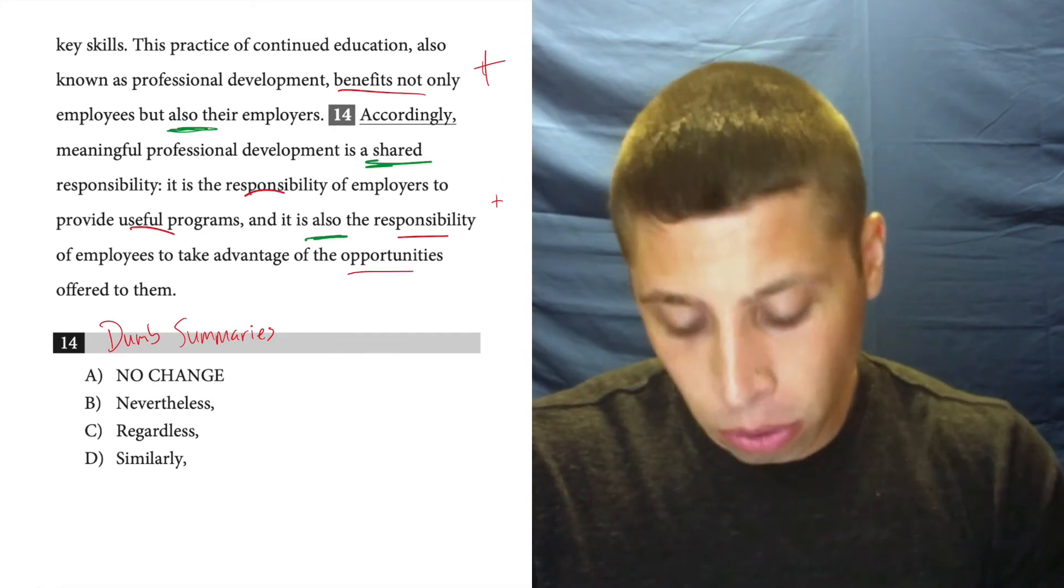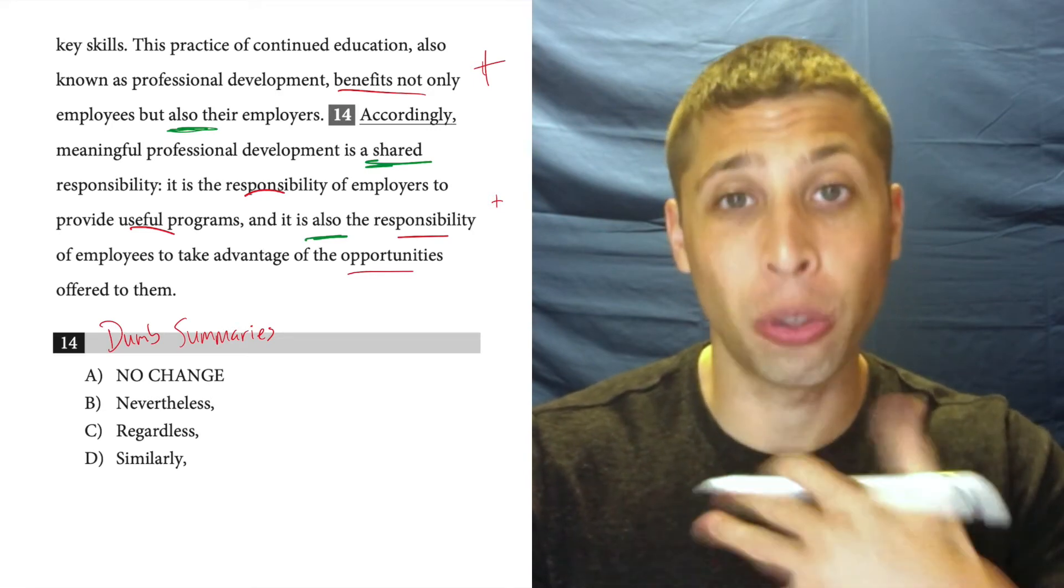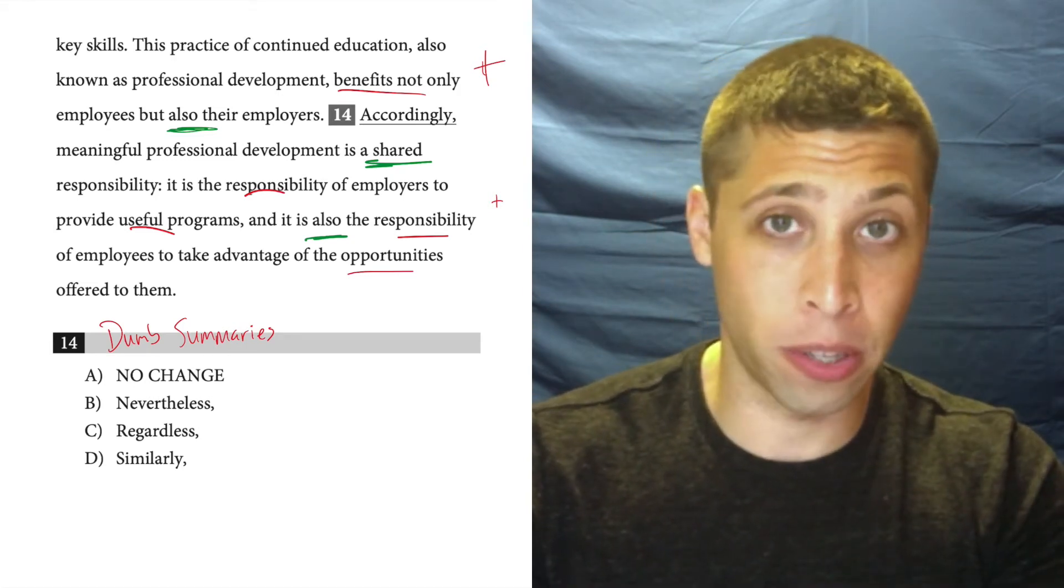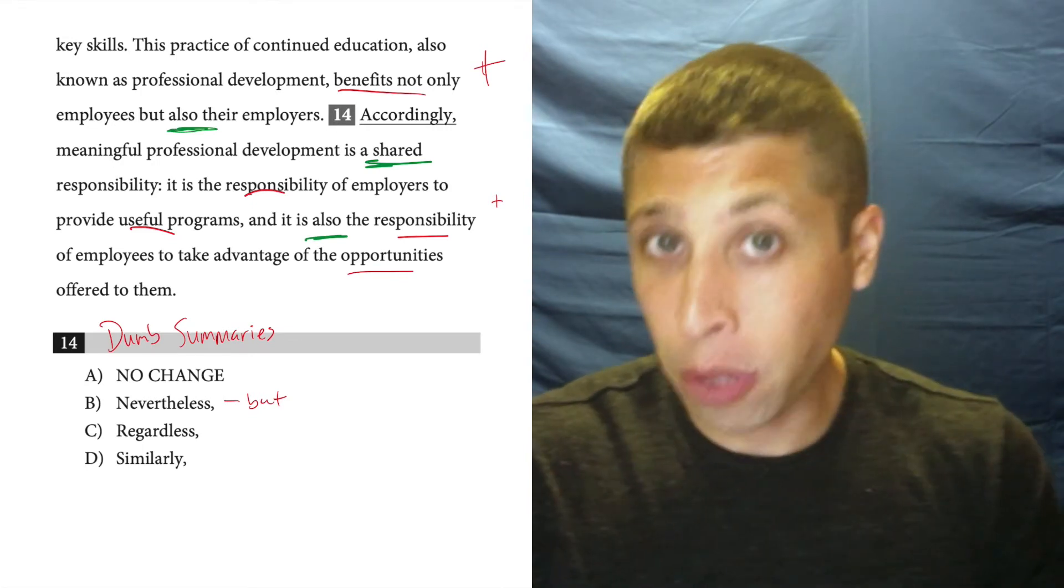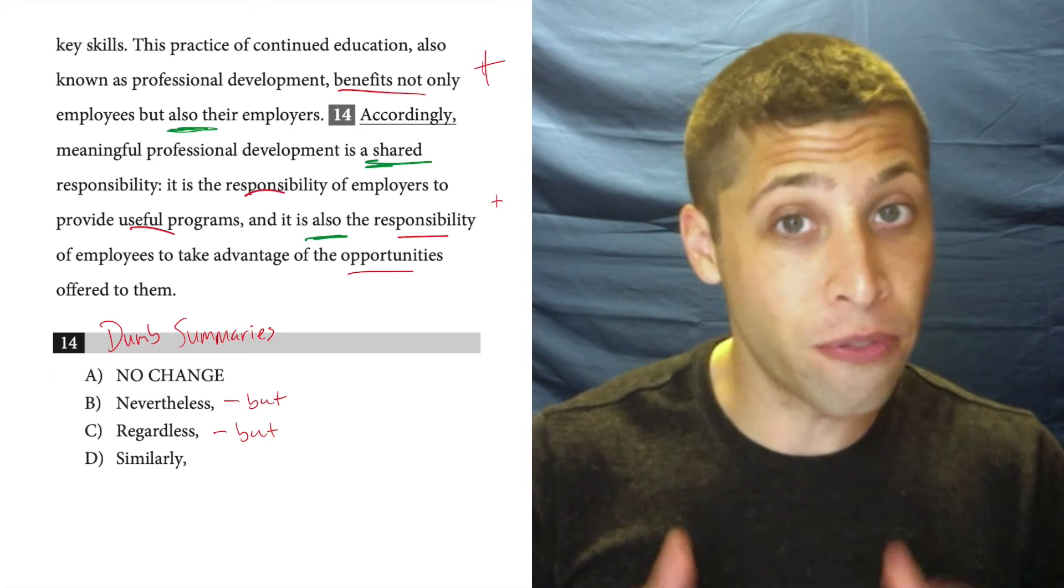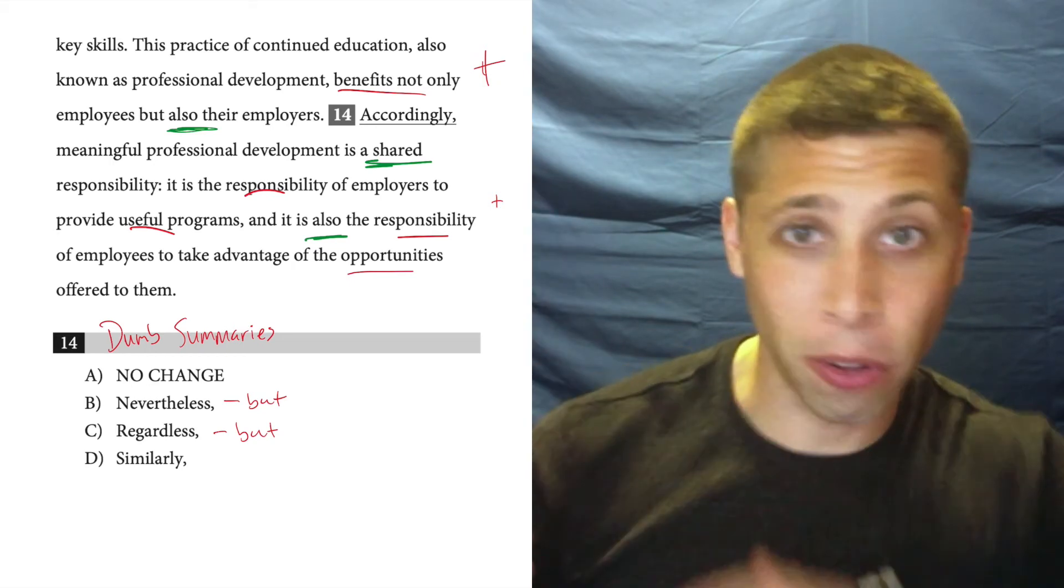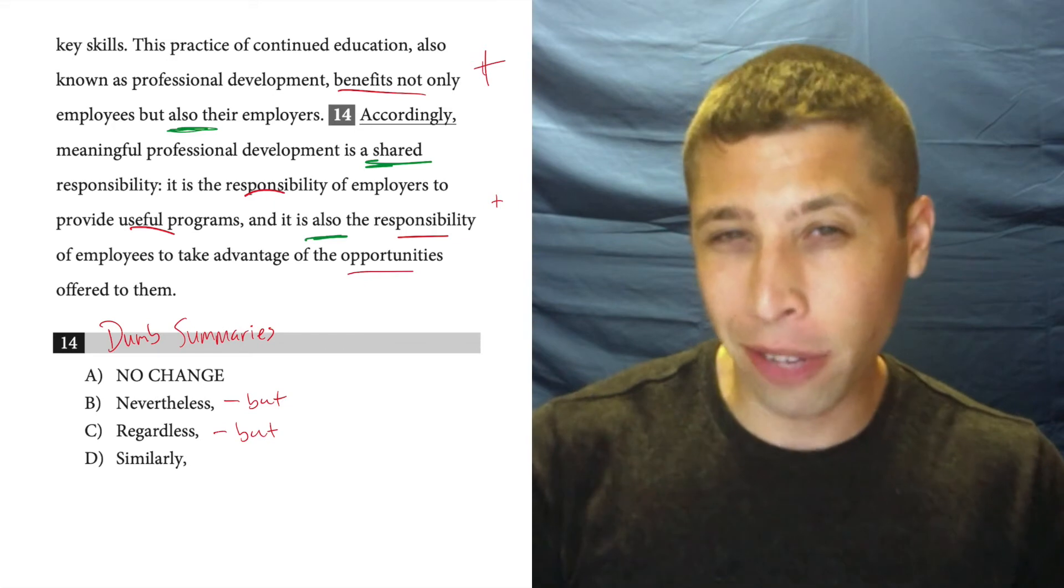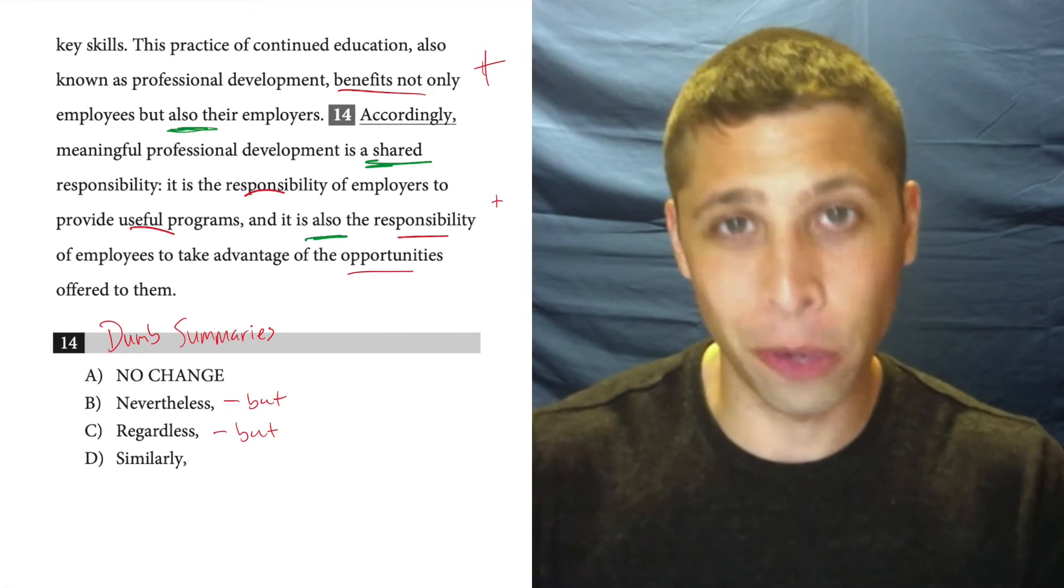And that helps me because I can also use dumb summaries on the answer choices. These transition words may seem complicated, but they all pretty much have some sort of analogous word that isn't complicated, a word we use all the time. Nevertheless is the one that jumps out first. That's basically a fancy way of saying but, or getting across some sort of contrast. But so is regardless. And here's the thing: here's where dumb summaries like this can really help us on these transition questions. There's a lot of times these are very difficult to sort through. But from experience and from the categories that I have in my study guide that I've put all these words into, I know that nevertheless and regardless basically mean the same thing.